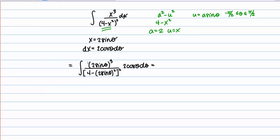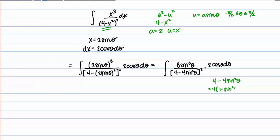Let's simplify this integral. On the top, cubing 2 sine of theta gives 8 sine cubed of theta. Inside the brackets on the bottom, squaring 2 sine of theta gives 4 minus 4 sine squared of theta, that whole quantity squared. Looking at 4 minus 4 sine squared of theta, we can factor out a 4 to get 4 times the quantity 1 minus sine squared of theta. By the Pythagorean identity, 1 minus sine squared of theta equals cosine squared of theta, so this becomes 4 cosine squared of theta.